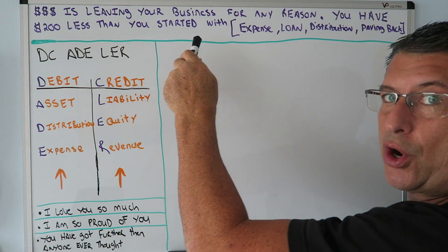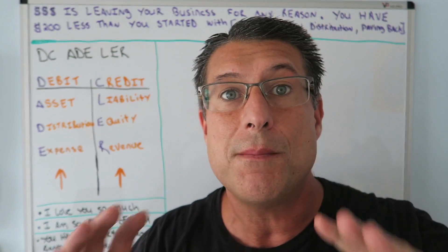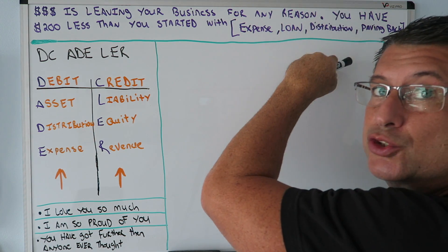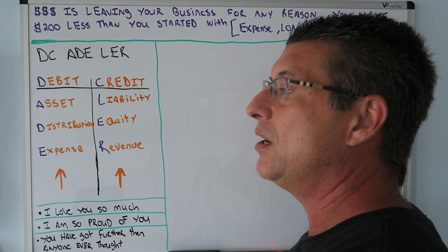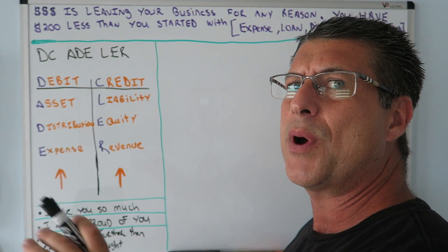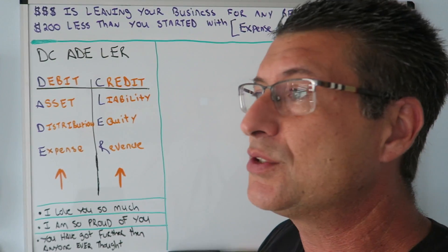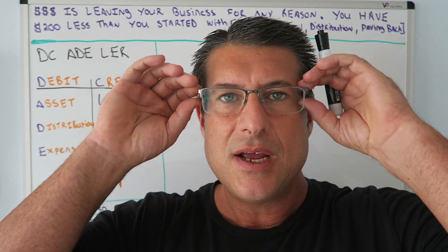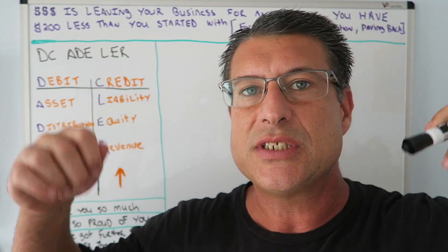You have $200 less than when you started. Now the reason you have less money could be for so many reasons — it could be an expense, it could be a loan, it could be a distribution or a draw, it could be paying back somebody, it could be a refund. This came about because one of my more popular videos starts with a draw: you take $100 out for a draw and everyone asks, what's the other side? What's the credit? So I realized no matter how many times I say this, I want to keep going back because there's a disconnect here.